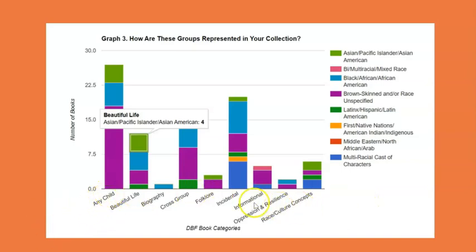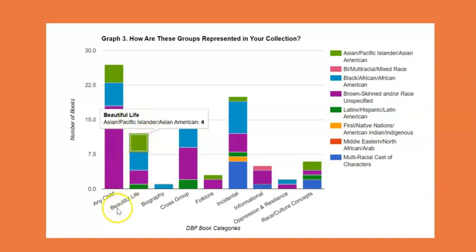On this chart, the multicultural elements are listed along the right side and along the bottom are the book category groups of characters that Diverse Book Finder has created. Each of these nine categories are defined more thoroughly in your online account. For example, the Any Child Character category refers to books that feature Black, Indigenous, people of color in which race, ethnicity, tribal affiliation, culture, immigration, religious or origin stories are not central to that particular book, whereas the Beautiful Life category shows books where those elements are central to the story — where a diverse character is having diverse experiences meaningful to that culture. In this audit, there are four Asian Pacific Islander or Asian American books found in the Beautiful Life category.